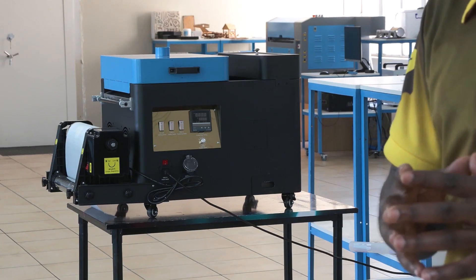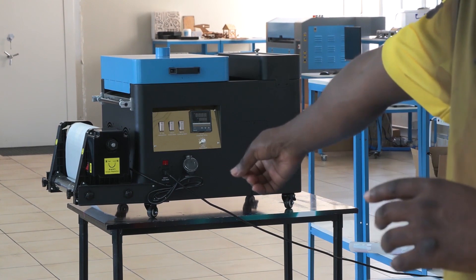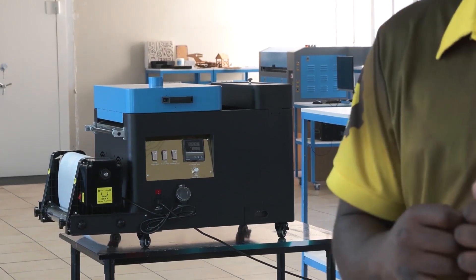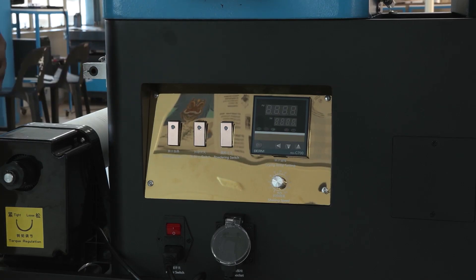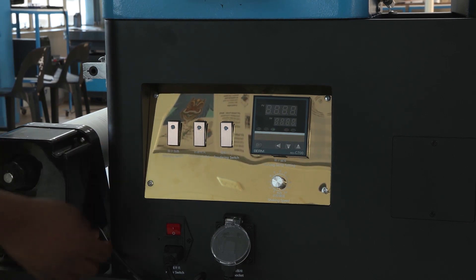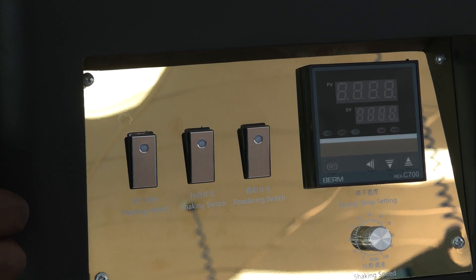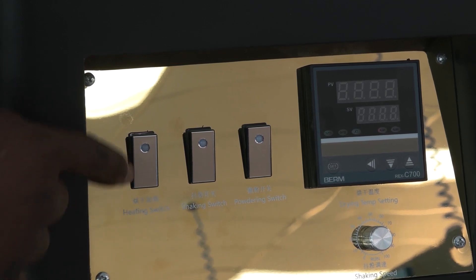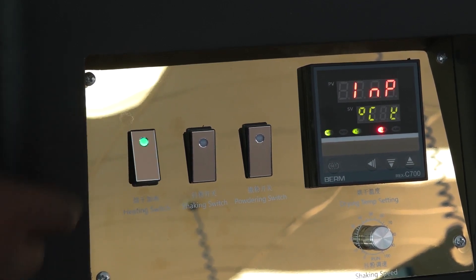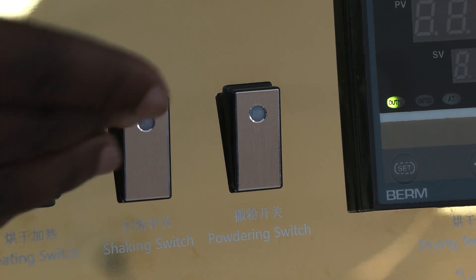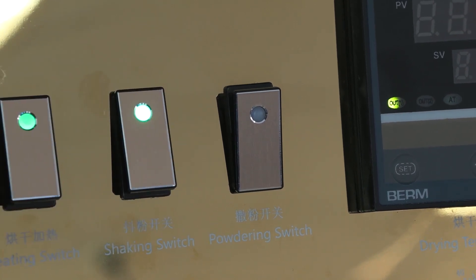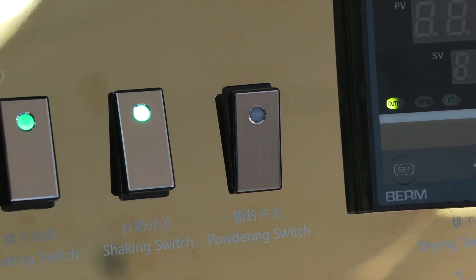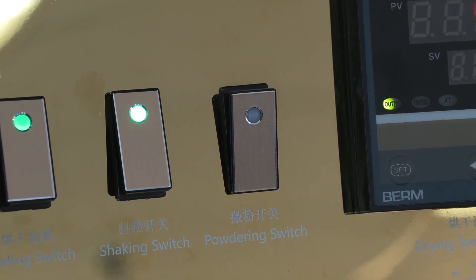But before we get to that let me take you through the control unit of the 300 powder shaker. So this over here is the 300 powder shaker, as you can see over here we have our main switch. And then first switch on the left is for your oven and then the next switch is for your shaking, and then the last switch on the right is for your dusting.